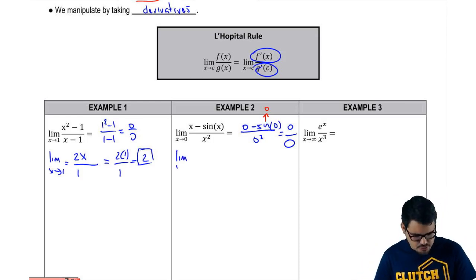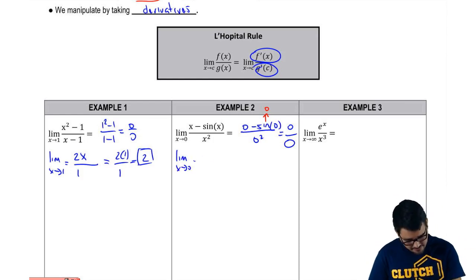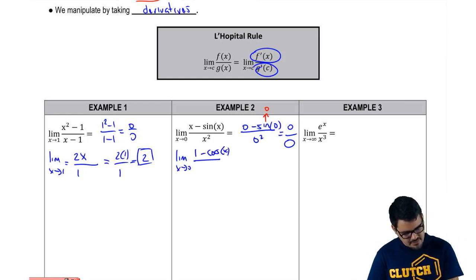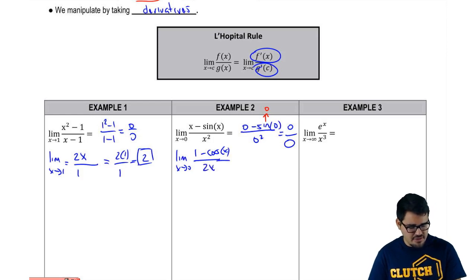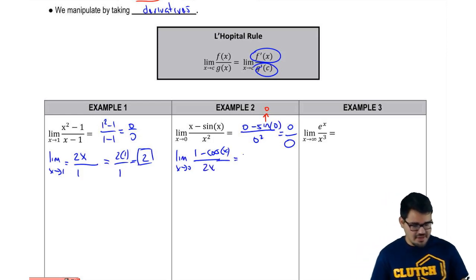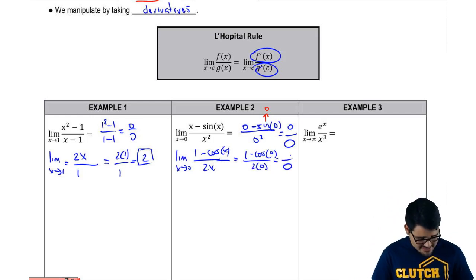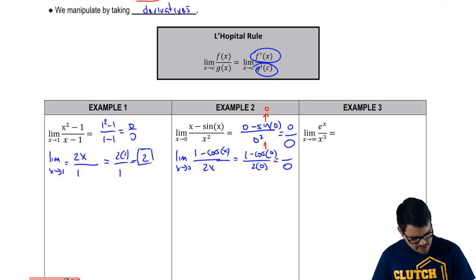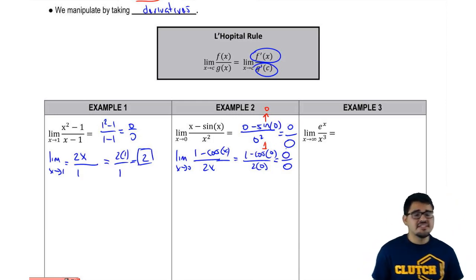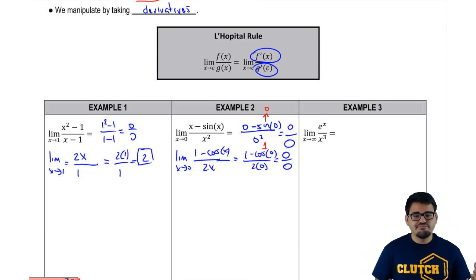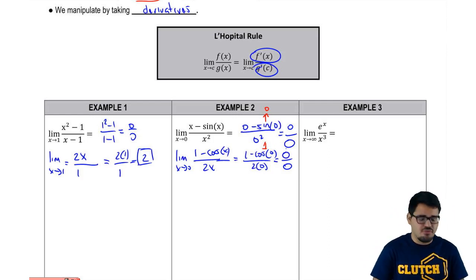I'm going to apply L'Hôpital's rule, taking the derivative of the top by itself. The derivative of (x - sin x) gives me 1 minus cosine of x. The derivative of the bottom x² gives me 2x. Now I plug in 0 again: I get 1 minus cosine of 0 over 2 times 0. Cosine of 0 equals 1, so the top is 1 minus 1, which is 0. The bottom is also 0. So I get 0 over 0 again — that's no good.